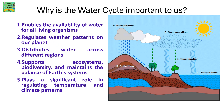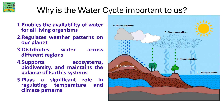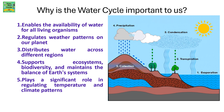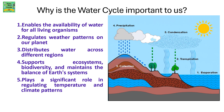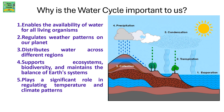Now here is an important question: why is the water cycle important to us? The first advantage of the water cycle is that it enables the availability of water for all living organisms. It regulates weather patterns on our planet, distributes water across different regions, supports ecosystems and biodiversity, maintains the balance of earth systems, and plays a significant role in regulating temperature and climate patterns.